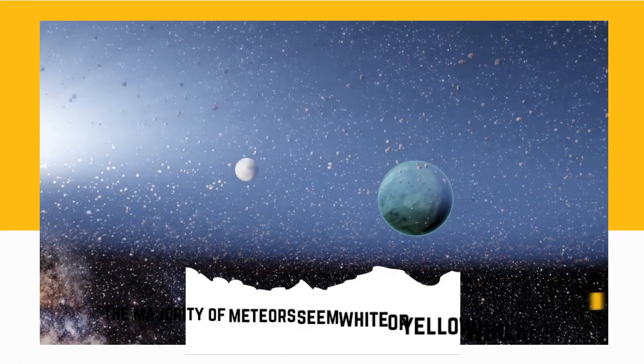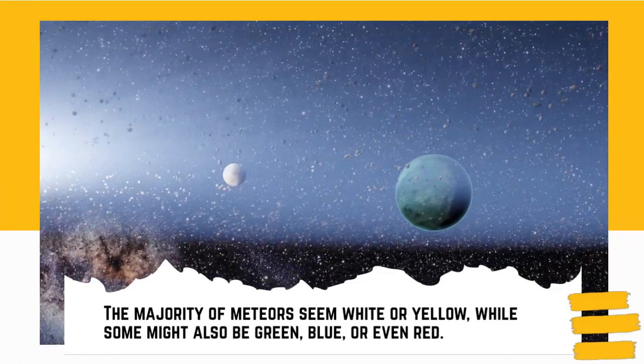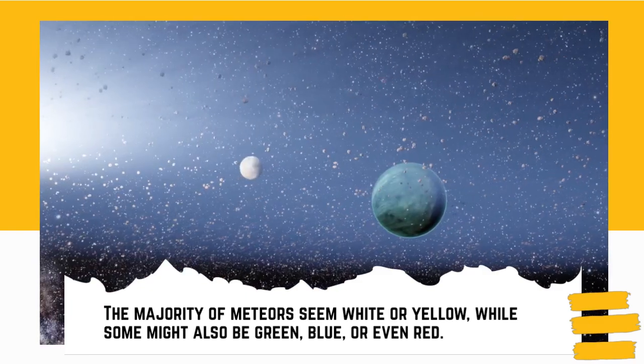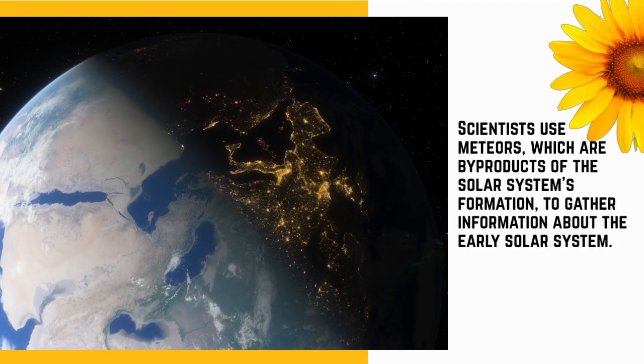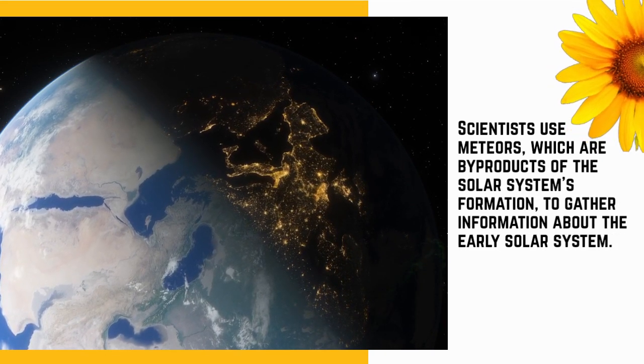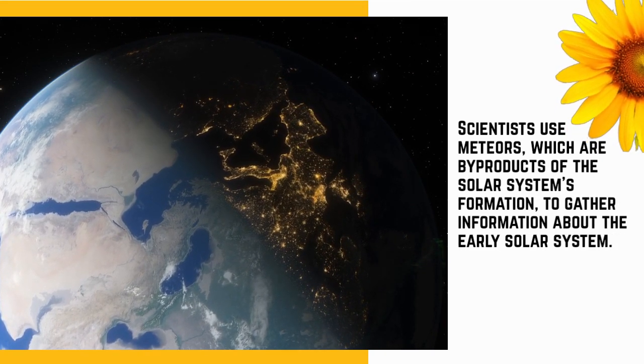The majority of meteors appear white or yellow, while some might also be green, blue, or even red. Scientists use meteors, which are byproducts of the solar system's formation, to gather information about the early solar system.